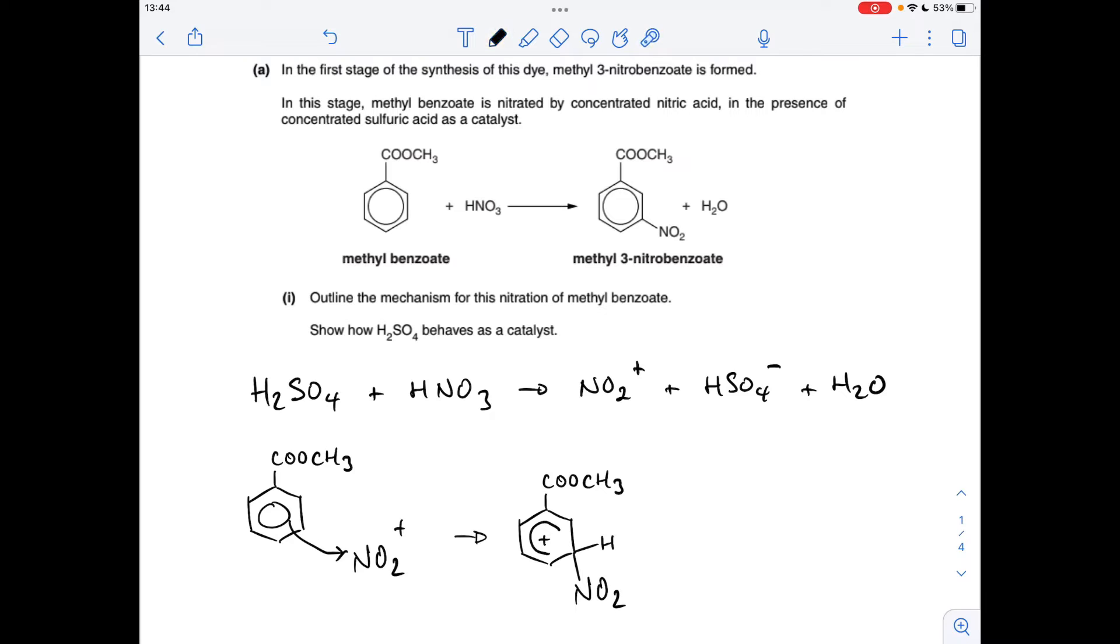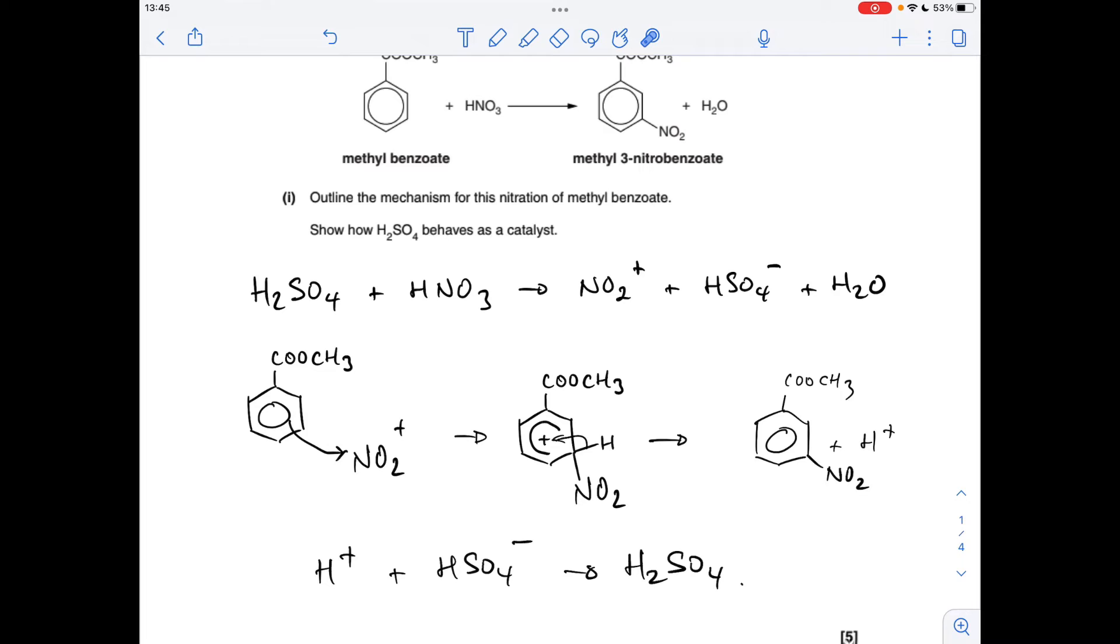Next thing to happen: pair of electrons from this carbon-hydrogen bond go back to reform the delocalised pi electrons, which gives us the product, this methyl three-nitrobenzoate and an H plus ion. And the way we show the sulfuric acid's behaving as a catalyst, we take the H plus ion that's just been generated and this HSO4 minus ion that was generated in that first step, combine them together, and you reform the sulfuric acid.